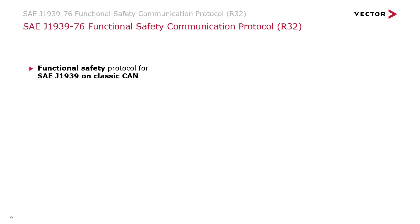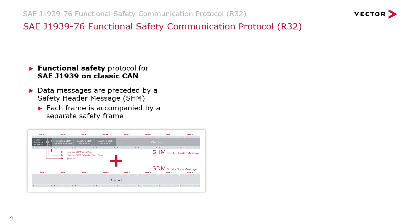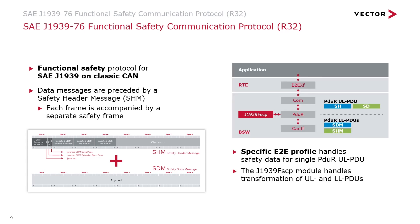SAE J1939-76 defines a safe communication protocol for J1939 on classic CAN, providing the answer for secure communication of safety-critical messages over the CAN network. A safe data message always consists of two frames on the physical layer. The safety header information is placed next to the data message itself by the RTE of the sending ECU. Safety is achieved via the defined message format, including mechanisms like sequence counter and checksum within the SHM part of the message. When receiving, the newly introduced J1939-76 module combines the two frames from the physical layer into one upper-layer PDU, which is then handled by the RTE E2E profile.